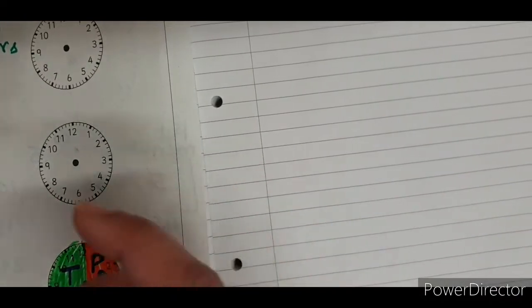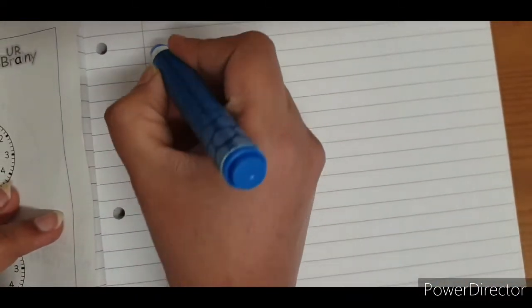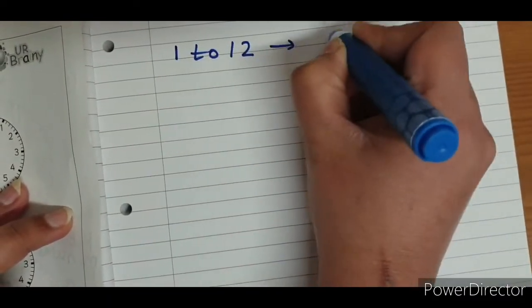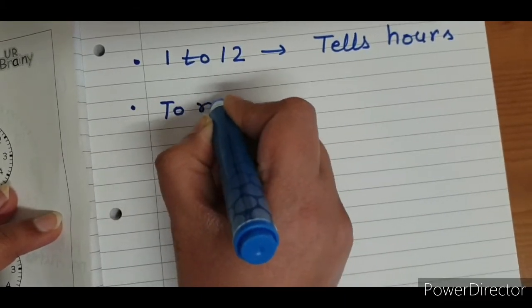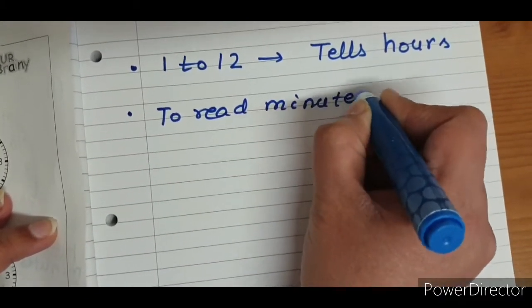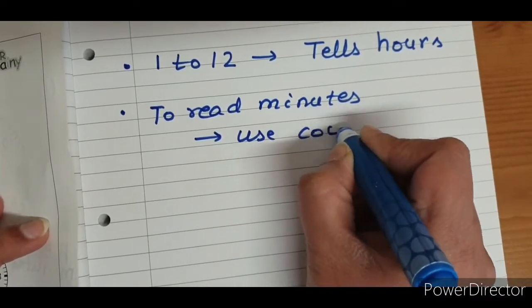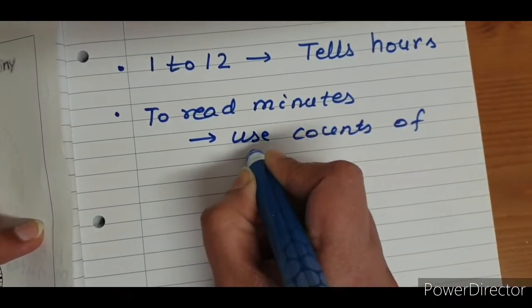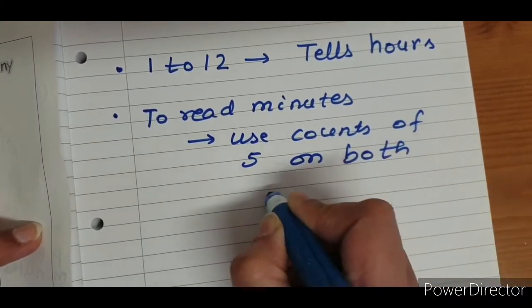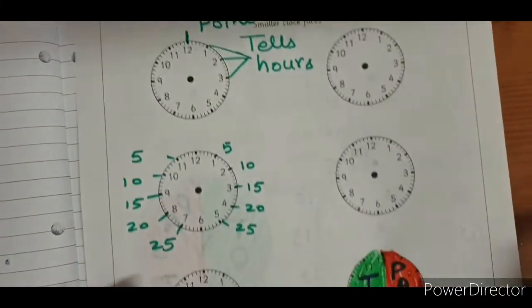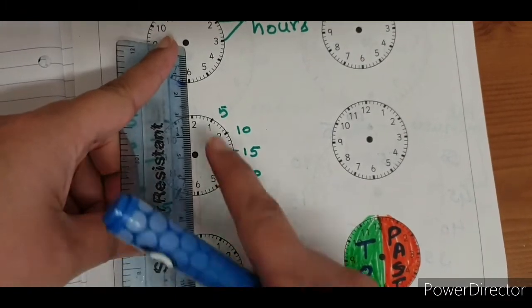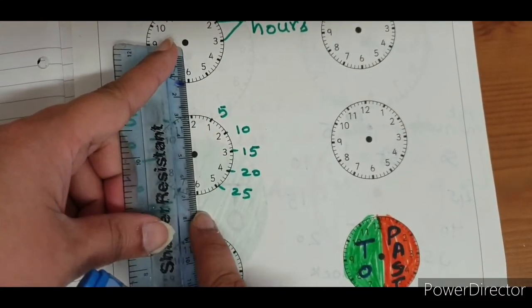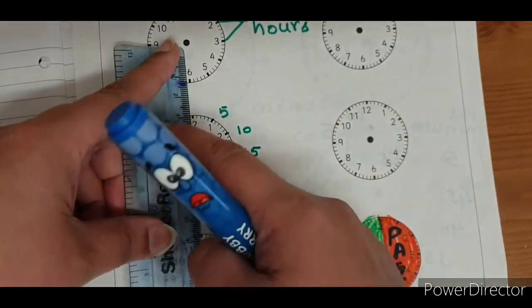So, now let me give you a quick recap of what we have learned. Number 1 to 12 tells hours. To read minutes, use counts of 5 on both halves. Like that. So, we divide the clock into two halves. And leaving 12 and 6, our half points, leaving them alone,